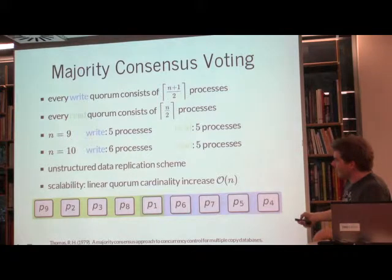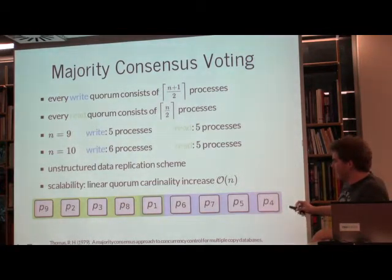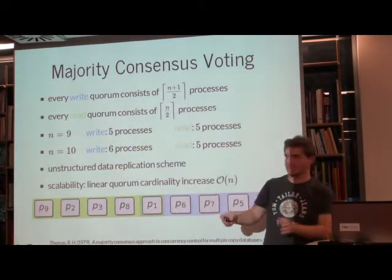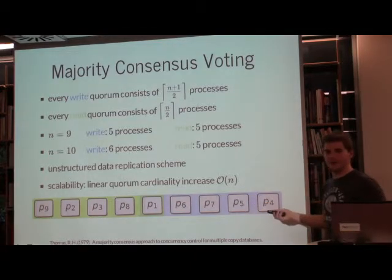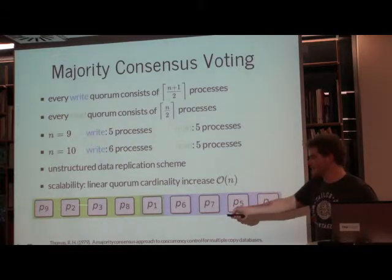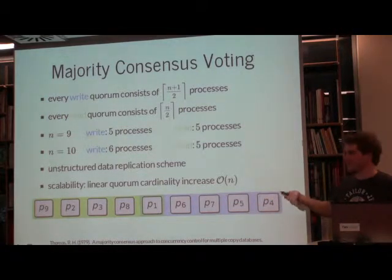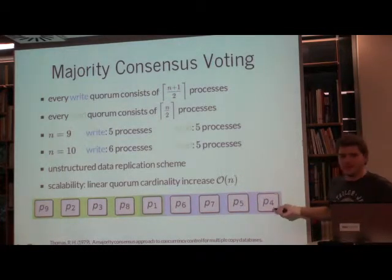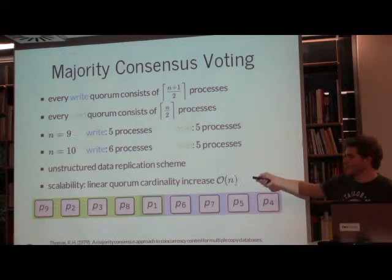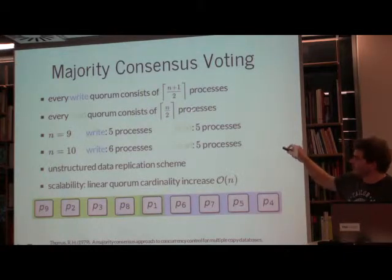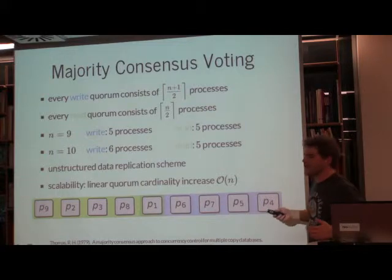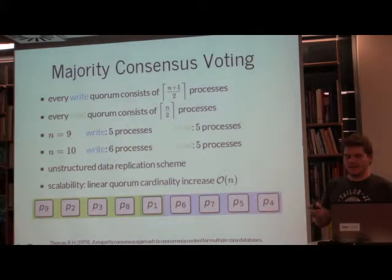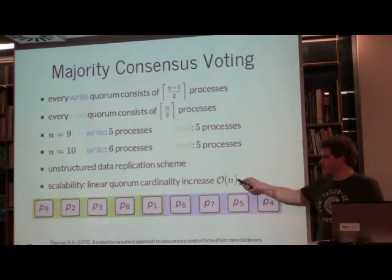With nine processes using majority consensus, four processes aren't enough for a write quorum because two disjoint sets of four could be locked simultaneously. We need five processes to write. Similarly, we need five processes to read. This is the majority consensus voting protocol — an unstructured data replication scheme where all processes are basically indistinguishable from each other.